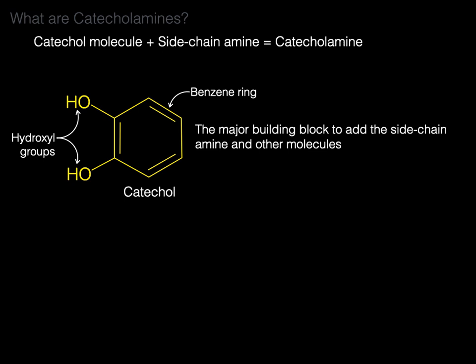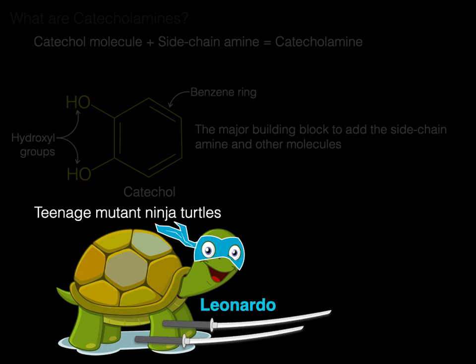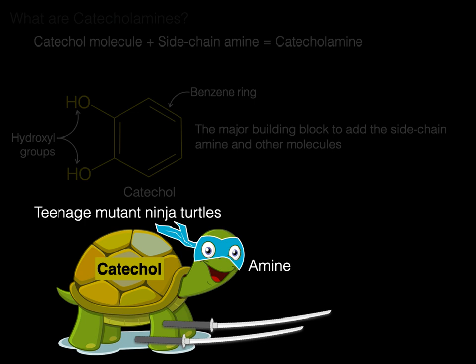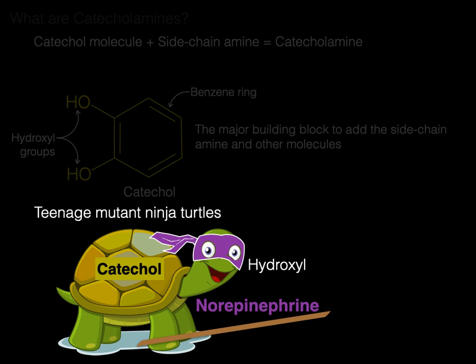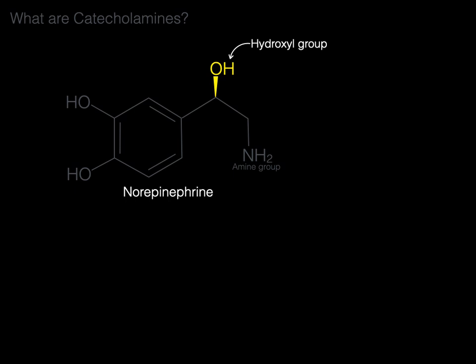Catecholamines are kind of like the Teenage Mutant Ninja Turtles, where if we take a turtle and add a blue mask and two ninja swords, we get Leonardo. But if we take another turtle and add a purple mask and a bo staff, we get Donatello. Similarly, if we take a catechol molecule and add an amine group, you get dopamine. Take another catechol molecule and add the amine and a hydroxyl group, you get norepinephrine. When we take the catechol, amine, and hydroxyl group and add a methyl group, we get epinephrine.